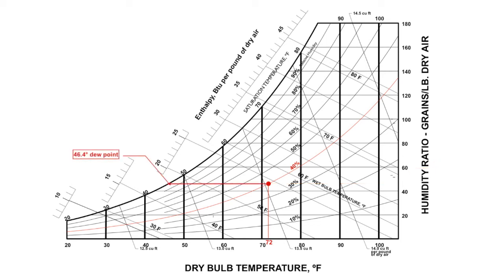If we read to the left, we can see that the dew point is 46.4 degrees. The enthalpy is 24.58 BTUs per pound. The dew point is a little over 13.5 specific volume and the vapor pressure is 0.316 inches of mercury.